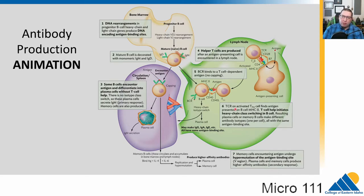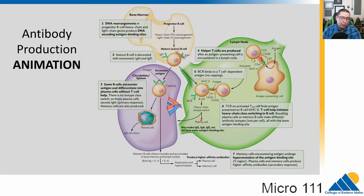We've seen this a few times, but I want to show you a full animation that explains the whole process. We're looking at a lymph node here, where an antigen-presenting cell is activating a T-cell, which goes out and activates B-cells. These can differentiate into plasma cells that go off and make lots of antibodies, and in this process, memory cells will actually travel back to the bone marrow. Let's go ahead and watch the animation.